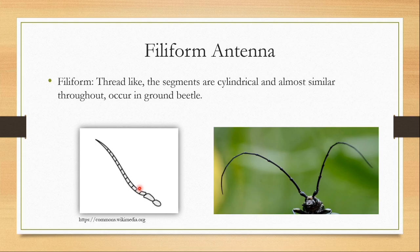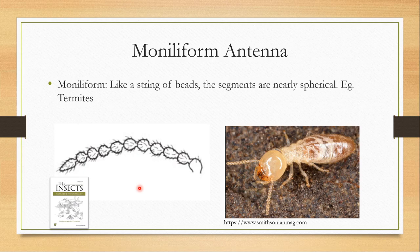The third type is the moniliform antennae — it is like a string of beads. The segments are nearly spherical and they are attached to each other with a small stalk-like structure. This is found in termites.